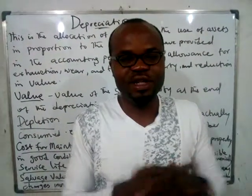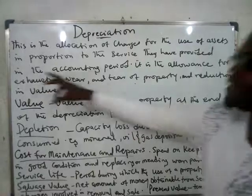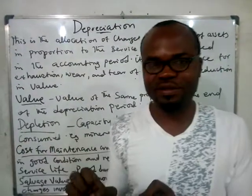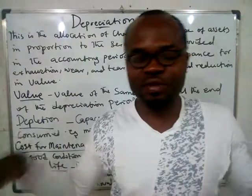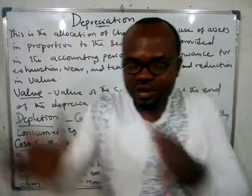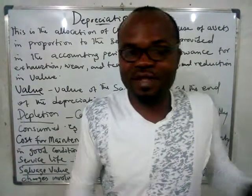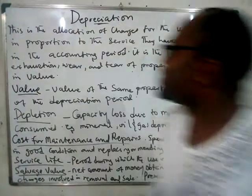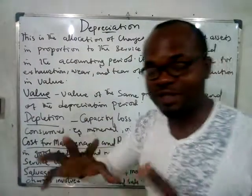The value was one million, now it's six hundred thousand. Technically, we define depreciation as the allocation of charges for the use of assets in proportion to the service they have provided. Whenever you want to do economic calculation, you have to allocate charges for all the assets — the equipment you're using in your plant — when they have gone through a period of use. You don't give them the same value they had when you just finished installing them.